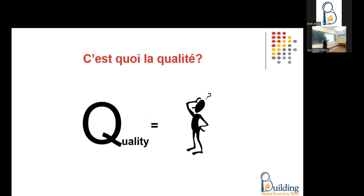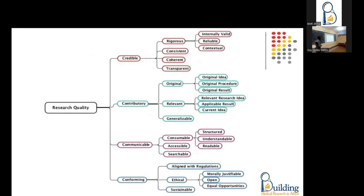Pour dire qu'une thèse est intéressante, que mon travail est intéressant, il y a certains critères qu'il faut pouvoir respecter. C'est ça la question. Finalement, lorsqu'on parle de la qualité, il s'agit de quoi ? Il y a ce graphique qui résume un peu les éléments qu'on doit retrouver lorsqu'on parle de la qualité d'un travail de recherche.